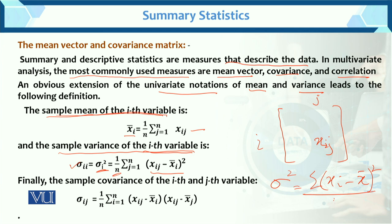If the sample variance is related to population variance, then capital N is used in the univariate case. In multivariate, x-bar is given the notation mu, because here we are talking about population variance. Finally, the sample covariance of the i-th and j-th variable: the notation is sigma_{ij}, which equals 1 over n, sum j from 1 to n of (x_{ij} minus x-bar_i)(x_{ij} minus x-bar_j).